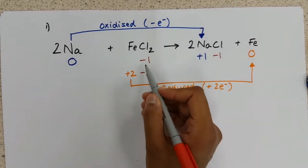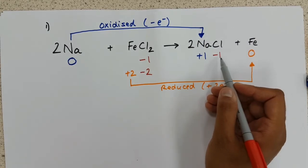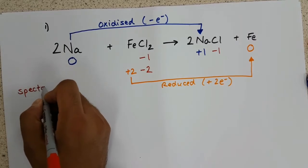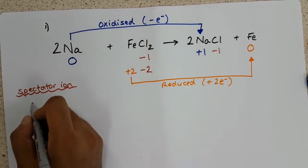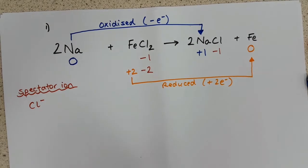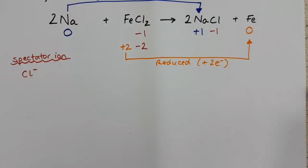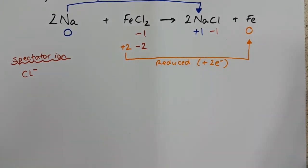As for chlorine, if we notice, chlorine is negative 1 in the reactants, and it is still negative 1 in the products. So we can comfortably say that our spectator ion, the ion which remains unchanged in this reaction, is our Cl minus ion. The spectator ion doesn't change during the reaction, so we can actually remove that from the equation and build up an ionic equation, but more about that in a moment.